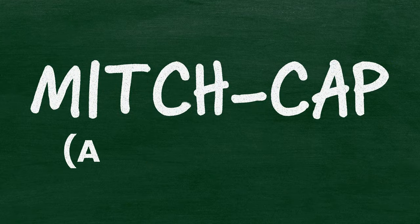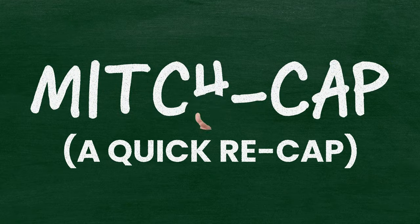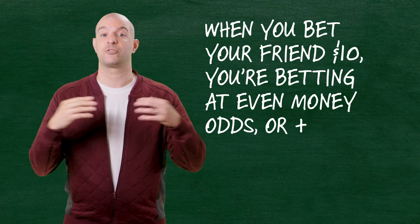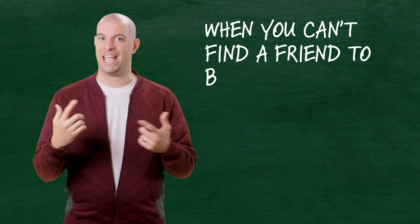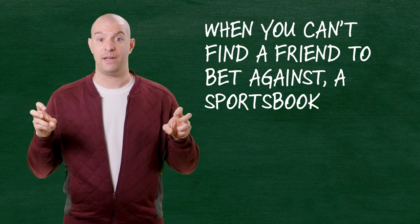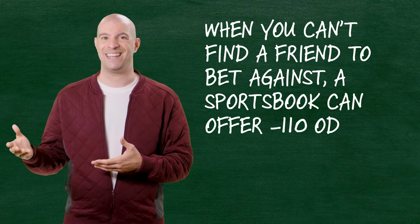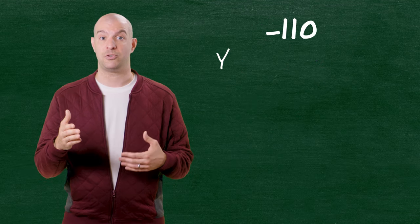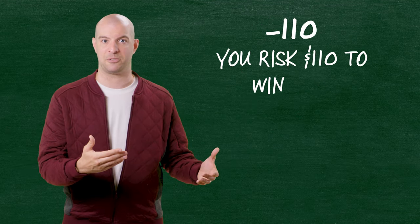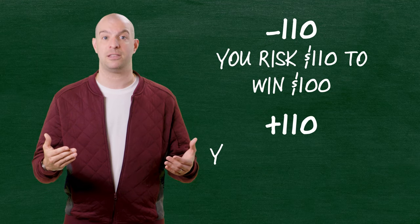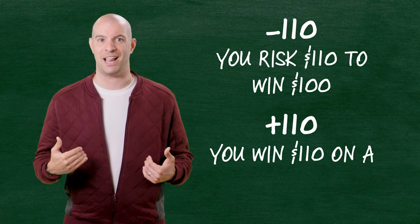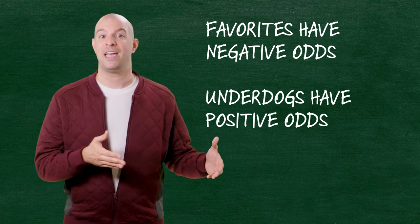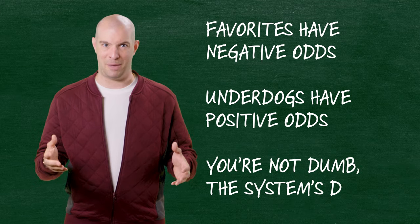Let's put everything together. When you bet your friend $10, you're betting at even money odds or plus 100. When you can't find a friend to bet against, a sportsbook serves as the Jeff here — they offer minus 110 odds, which is basically a service fee to facilitate the bet. Minus 110 means you have to risk $110 to win $100. Plus 110 means you win $110 on a $100 bet. Favorites have negative odds. Underdogs have positive odds. And you're not dumb — the system's dumb.